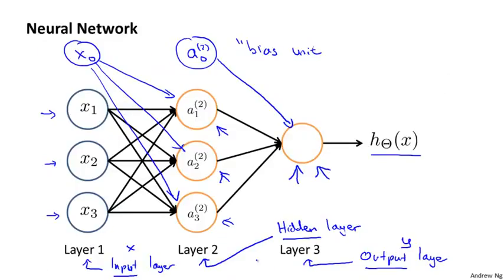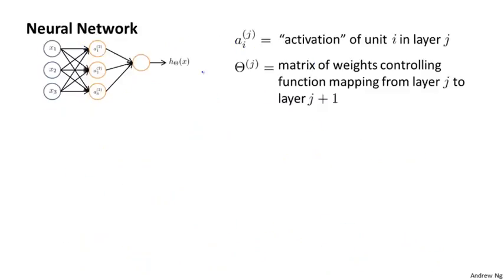So, I want to be really clear about what this neural network is doing. Let's step through the computational steps that are embodied by this, represented by this diagram. To explain the specific computations represented by a neural network, here's a little bit more notation. I'm going to use a superscript j subscript i to denote the activation of neuron i, or of neural unit i in layer j.